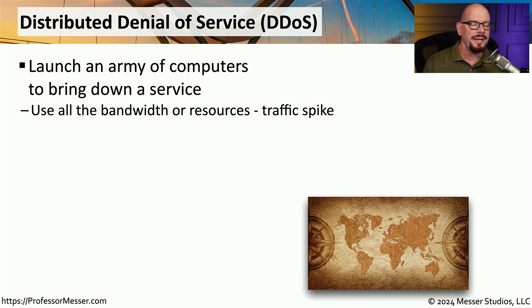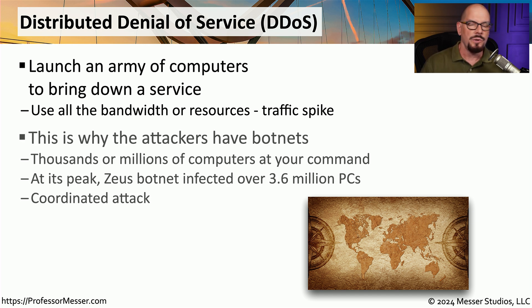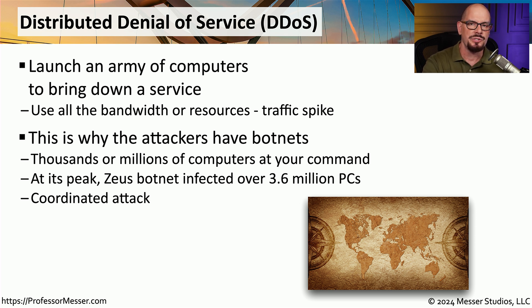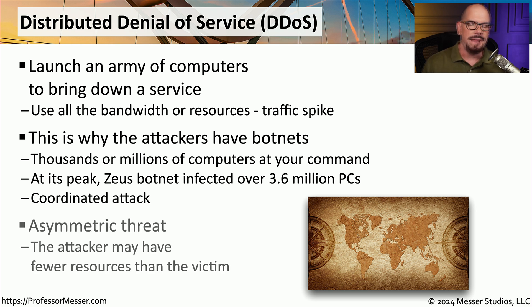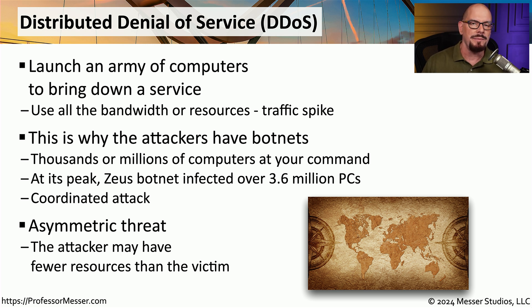We refer to this as a distributed denial of service, or DDoS. For example, a single botnet may be able to take over millions of personal computers and have all of those devices direct all of their traffic towards one single server on the internet. This type of coordinated attack from multiple devices that may be located anywhere in the world is a very common form of a distributed denial of service attack. Devices with very limited access to the internet could still manage to bring down systems with many more resources available. We refer to this as an asymmetric threat because the attacker has so few resources and yet they're able to disrupt and bring down systems with many more resources.